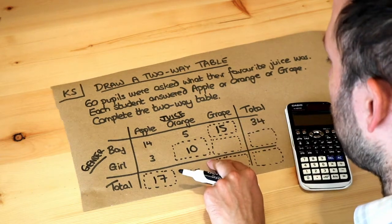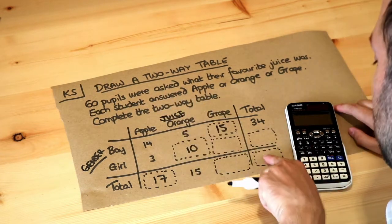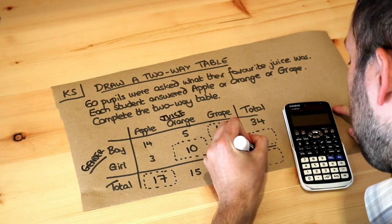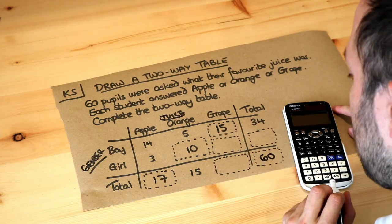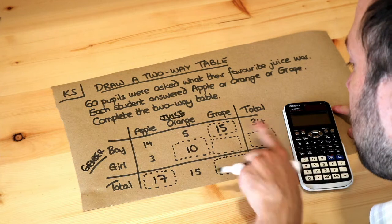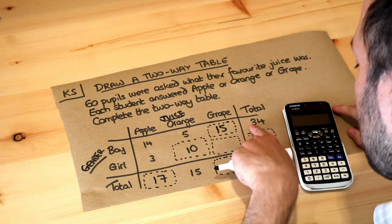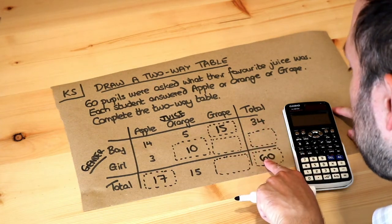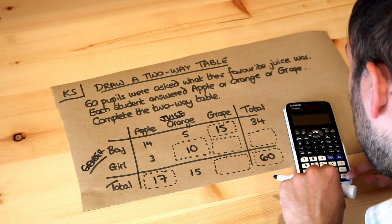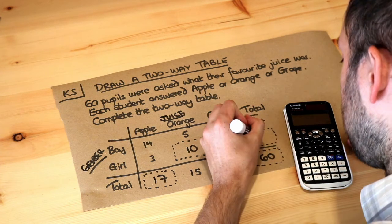We're also told in the question there were 60 pupils in total. The bottom right is where you have the total number of people. We know there were 34 boys and 60 people in total, so 60 minus 34 gives us the number of girls, which is 26.